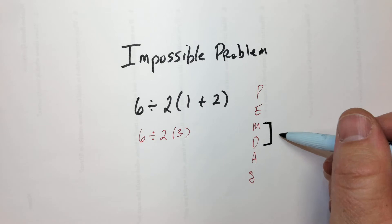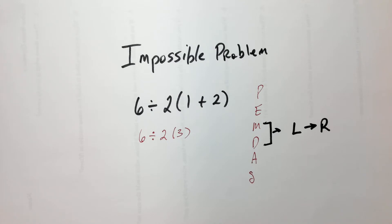So, these two things, they go from left to right. Left to right, it's not multiplication first, it's whichever of these two comes first, left to right.